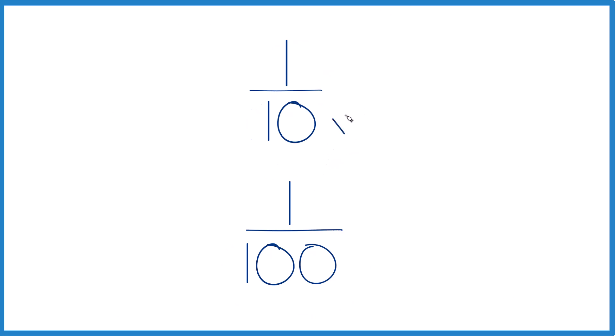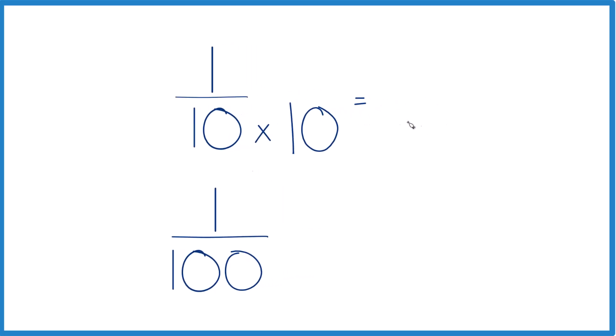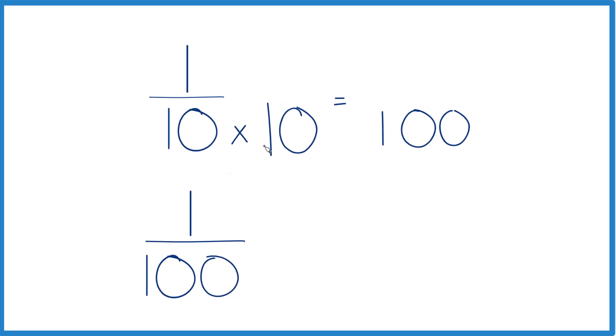So why don't we multiply 10 times 10 because that'll give us 100 here. But we can't just multiply the denominator by 10. We have to multiply the numerator by 10.